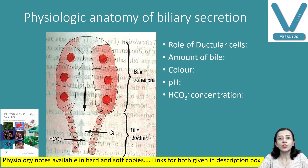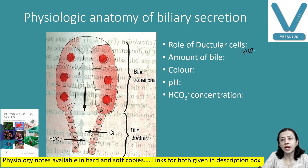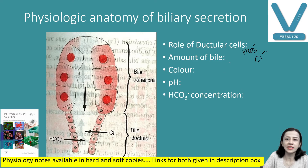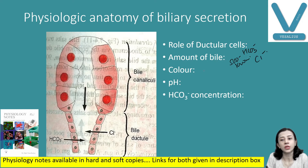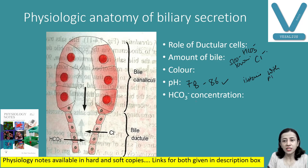Now, physiological anatomy of biliary secretion. The ductal cells contribute to bile secretion. After secretion of bile, these ductal cells contribute to the bicarbonate and chloride ion concentration of the mixture of hepatic bile. Amount of bile secreted is 500 ml to 1000 ml per day. The color is transparent, alkaline, golden yellow. The pH of the gallbladder and hepatic bile is different — approximately 7.8 to 8.6. It is isotonic with plasma, and bicarbonate ion concentration increases with increase in the rate of secretion of bile.